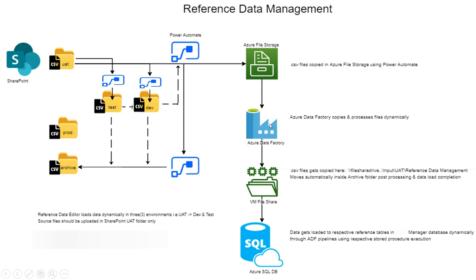This pipeline processes files dynamically. Suppose the user uploads five files — those five files will get loaded into five tables in SQL Server. The Data Factory processes each file one by one dynamically using the file name. The file name and the table name in SQL Server must be the same to make this process dynamic.